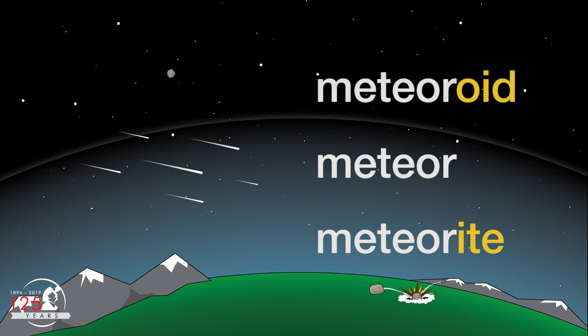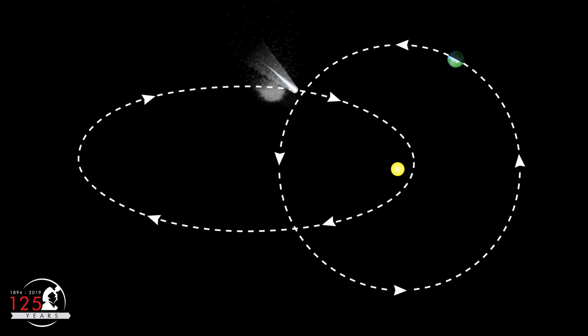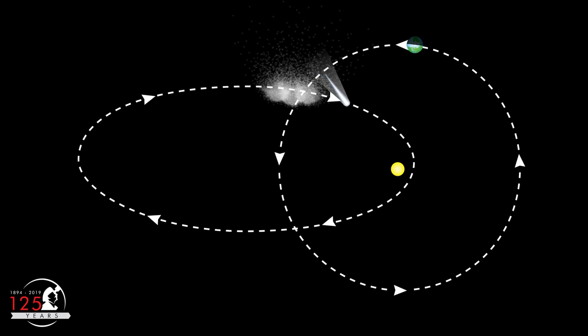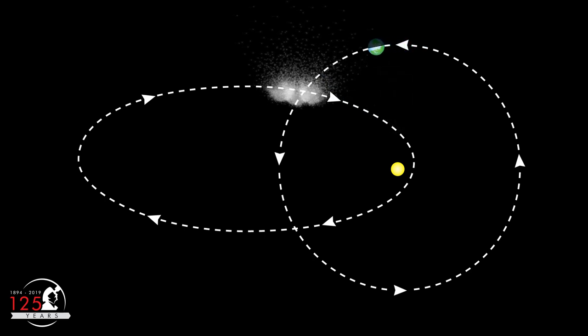When they're still in space, meteors are called meteoroids. They are pieces of debris removed from the surfaces of comets and asteroids. This debris continues in orbit around the Sun as meteoroid streams.